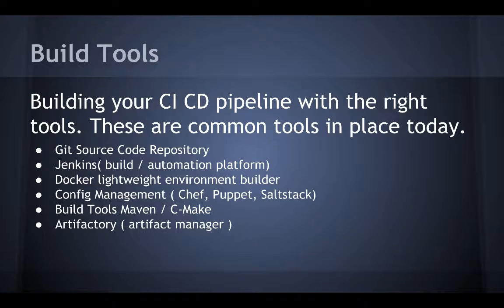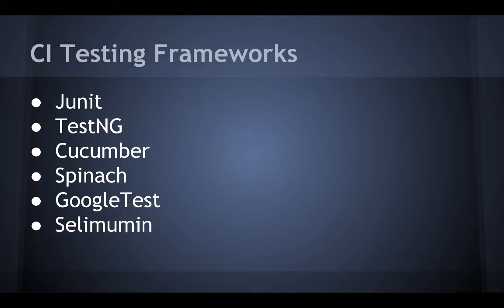Now let's talk about the build tools pipeline — building your CI/CD pipeline with the right tools. These are the tools I recommend: Git as a source code repository; Jenkins, the industry standard for build automation; Docker, great for building quick and clean build environments; build tools like Maven, Gradle, and CMake are essential. Then you will need a build or artifact management tool to help you with build promotion and deployment repositories.